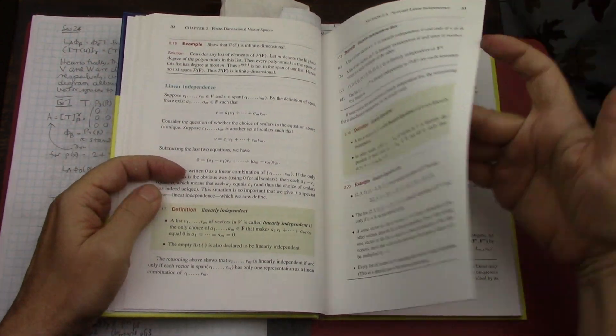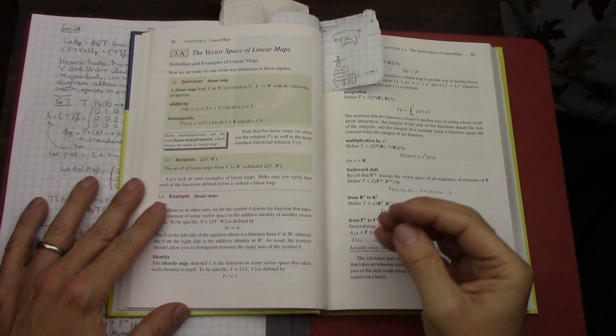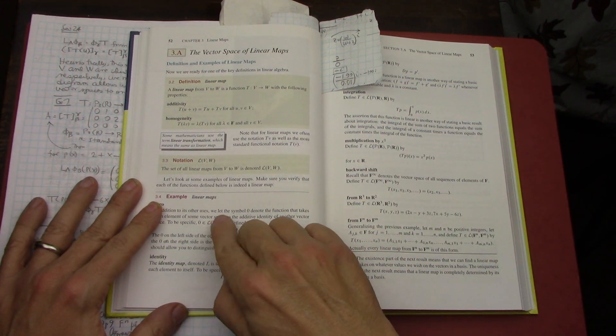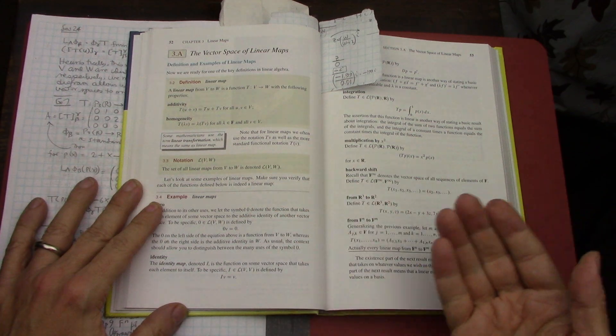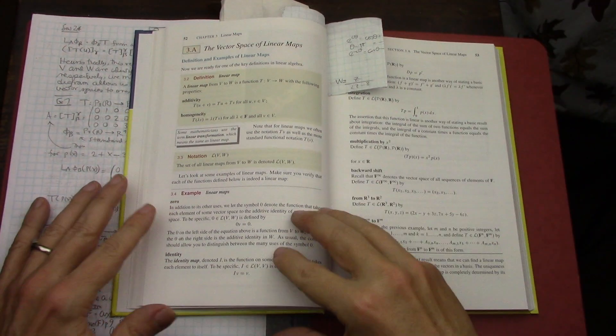Then all the way to page 52, and I've mentioned this before in the previous video, the vector space of linear transformations or linear maps, the wiggly L VW, also gets a really heavy treatment in Axler.